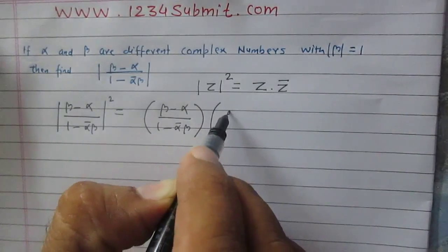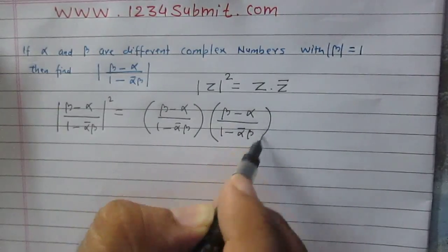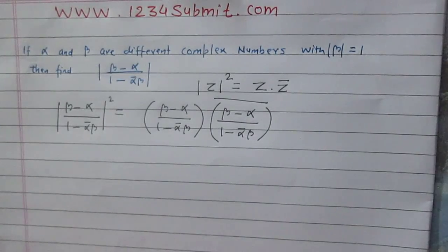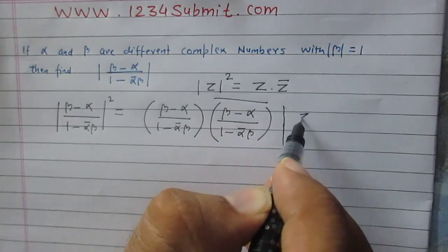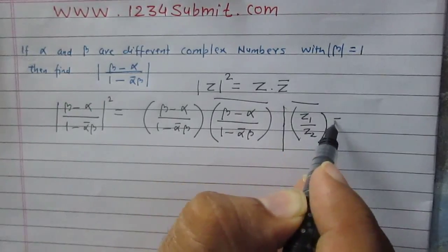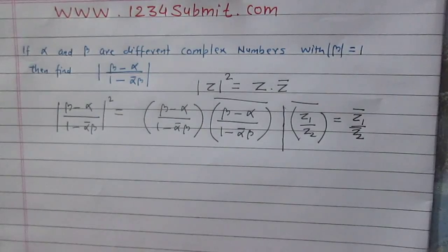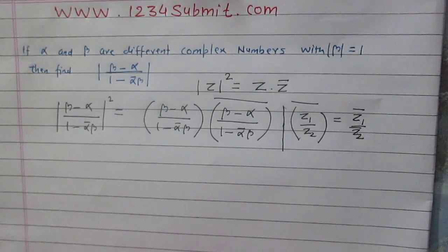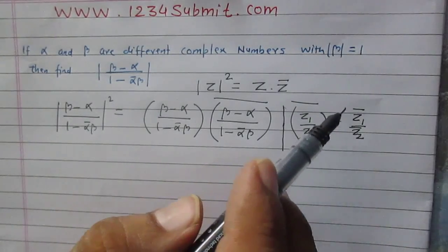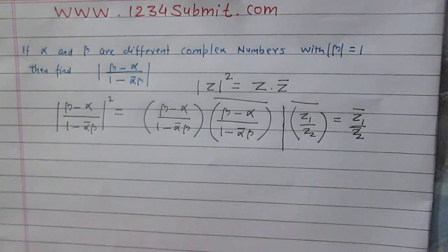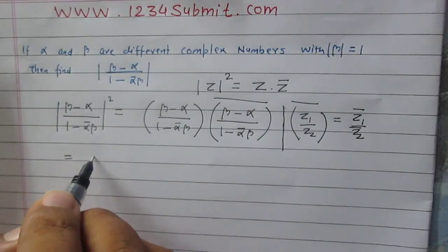Now let us consider another property: (z1/z2) conjugate is equal to z1 conjugate divided by z2 conjugate. This property says that if you divide two complex numbers and then find the conjugate of their division, or you first take their conjugates and then divide them, the results are the same. So the conjugate of the division of two complex numbers is equal to the division of their conjugates. Using this property, the right-hand side of this equation becomes (beta minus alpha) / (1 minus alpha conjugate beta) multiplied by its conjugate form.